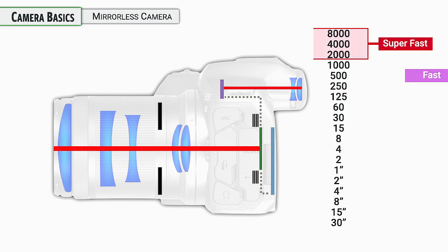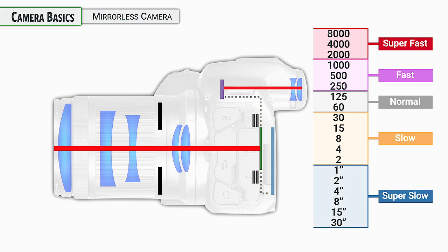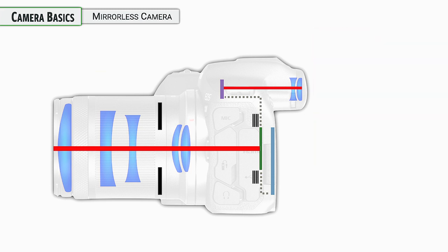Different shutter speeds are available and are used for stopping action or compensating for camera motion — there are a lot of great reasons for this, but that's more of a general photography topic.